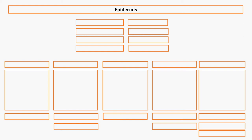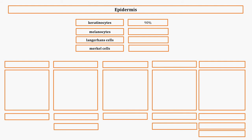Now we want to talk about the four types of cells in the epidermis and the five layers of the epidermis. Here are the four types of cells: keratinocytes, melanocytes, Langerhans cells, and Merkel cells. Keratinocytes account for 90%, melanocytes 8%, Langerhans cells a little over 1%, and Merkel cells slightly under 1%.